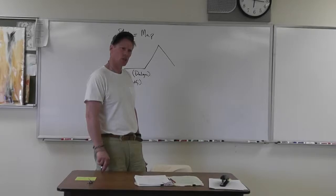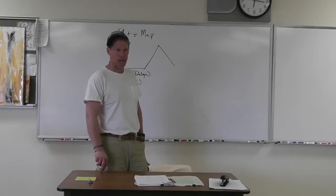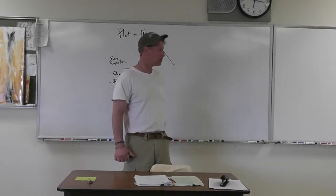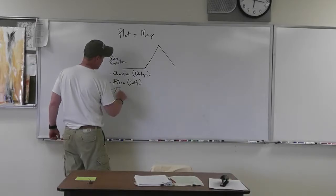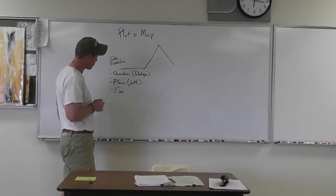For example, Shirley Jackson's Lottery will play an interesting game with place. This story can be read as a story that takes place way in the past, a story that takes place in the current present, or it could even be read as a futuristic story, way out there in the future. The other thing has to do with time.